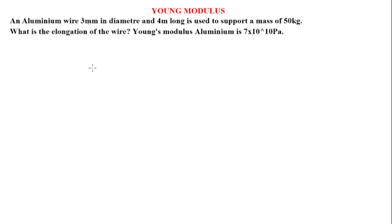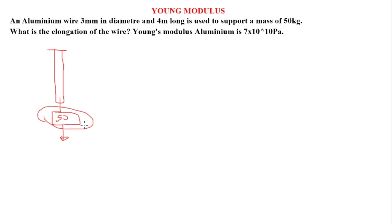Let's solve another problem. An aluminum wire is used to support a load. We are given the diameter of the wire, and the mass of the load is 50 kg. We were not given the force directly, but the force will be the weight of the object: F = mg = 50 multiplied by the acceleration due to gravity, using 9.8, which gives 490 N as the force.